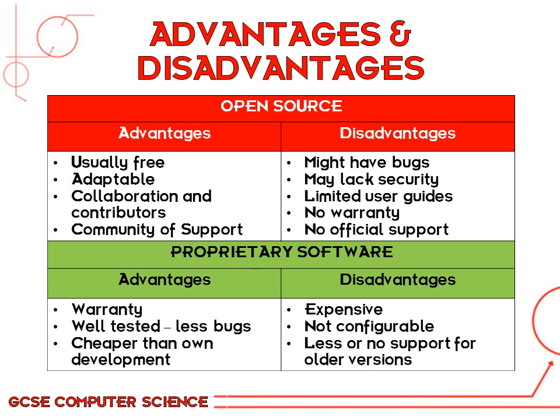For example, you might have to spend hours and hours or pay someone a lot of money to customise open source software to suit you. A Moodle VLE for a school is a good example — the software is free, but to customise it to how you want it, you have to pay someone to do that.